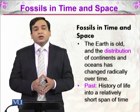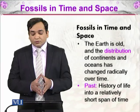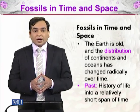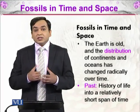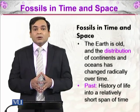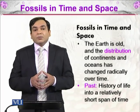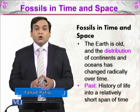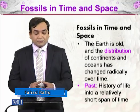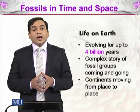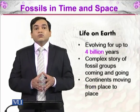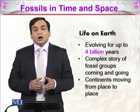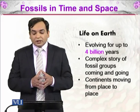scientists were thinking of life as having a very short span. Life was thought to have evolved within a very short span, not having as extensive an amount of time as we know today. But the latest studies have told us that life forms have evolved over a long period of time. Life on Earth evolved 4 billion years ago, and complex fossil groups are there which are coming and going.